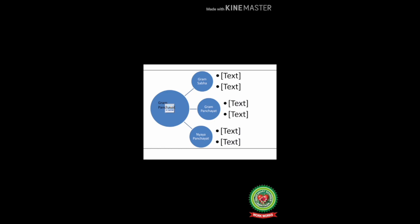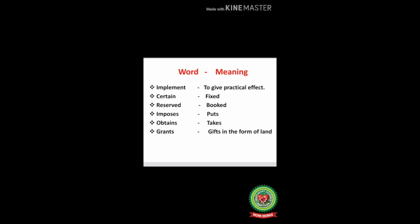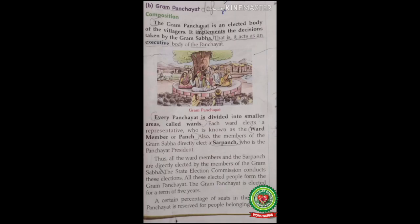Now let's start reading the composition. The gram panchayat is an elected body of the villagers. It implements the decisions taken by the gram sabha — it acts as an executive body of the panchayat. The word 'implement' means to give practical effect. So the gram panchayat carries out the decisions taken by the gram sabha. 'Executive' means having the power to put plans or laws into effect.